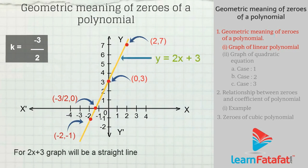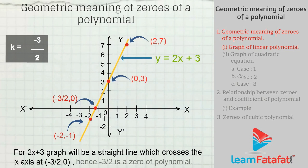For 2x + 3, the graph will be a straight line which crosses the x-axis at (-3/2, 0). Hence, -3/2 is a zero of the polynomial.